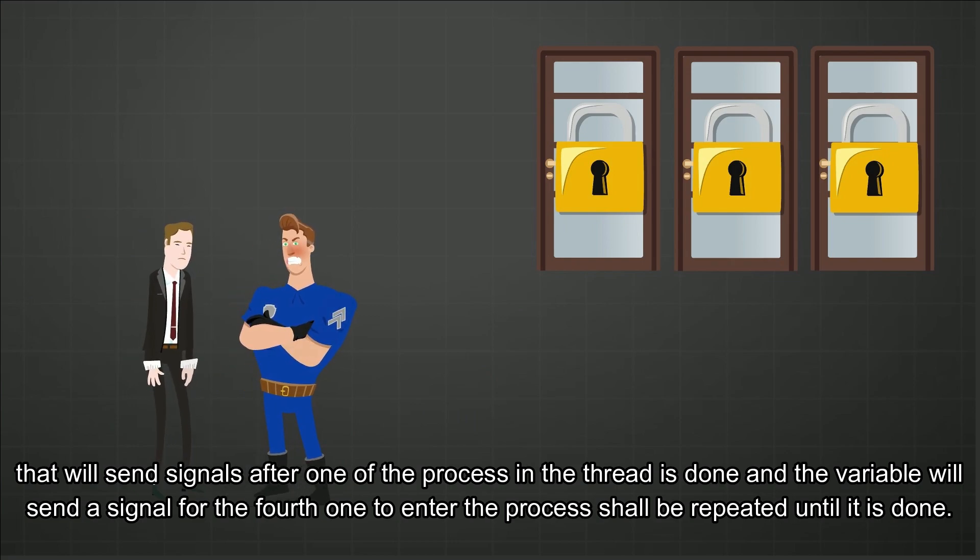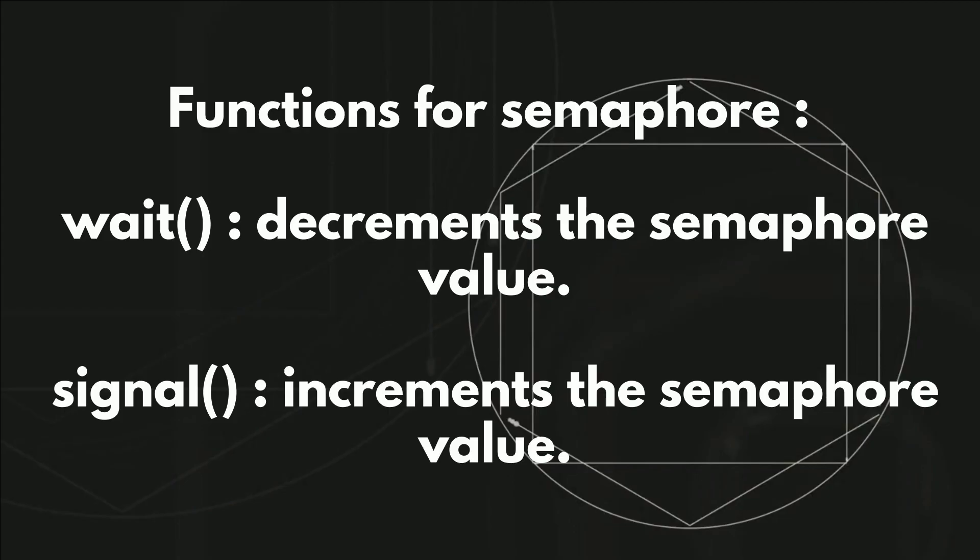And the variable will send signals for the fourth one to enter the process. This shall be repeated until it is done. Functions of semaphore: Wait increments the semaphore value. Signal increments the semaphore value. For mutex,